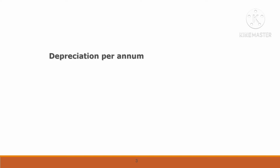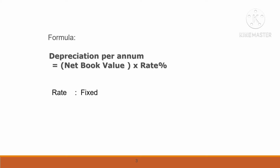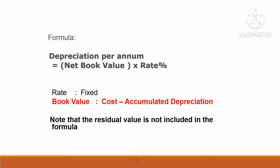The formula for depreciation under the reducing balance method is: net book value multiplied by the rate of depreciation. Book value is equal to cost less accumulated depreciation. We must note that the residual value is not included in the formula.